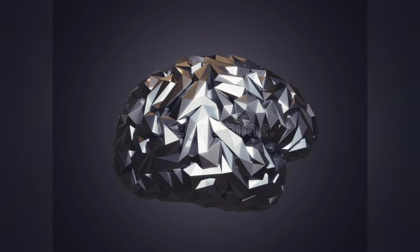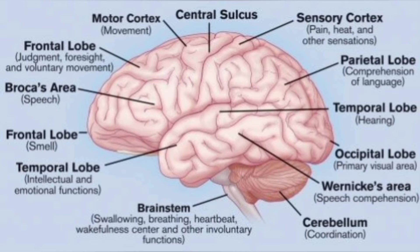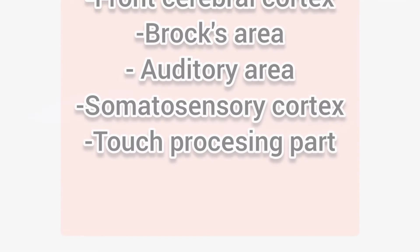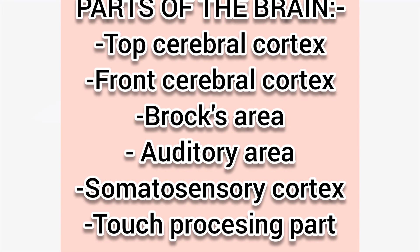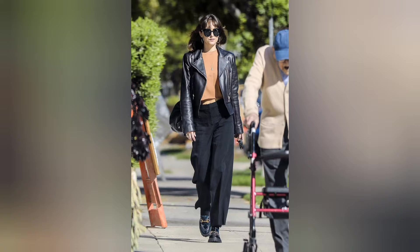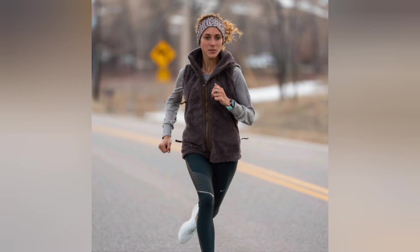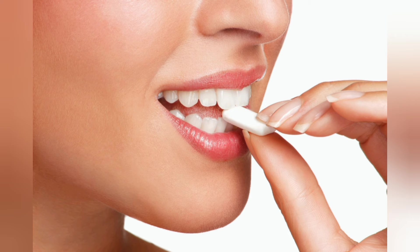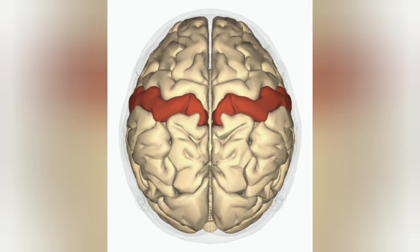There are 12 major parts of the brain. Initially we are going to see six major parts. The first part is the top cerebral cortex. This part of the brain is responsible for the movement of our body muscles. For example, if we want to walk, run, chew, dance, swim, etc., this part is the most important one for the motion of the body.